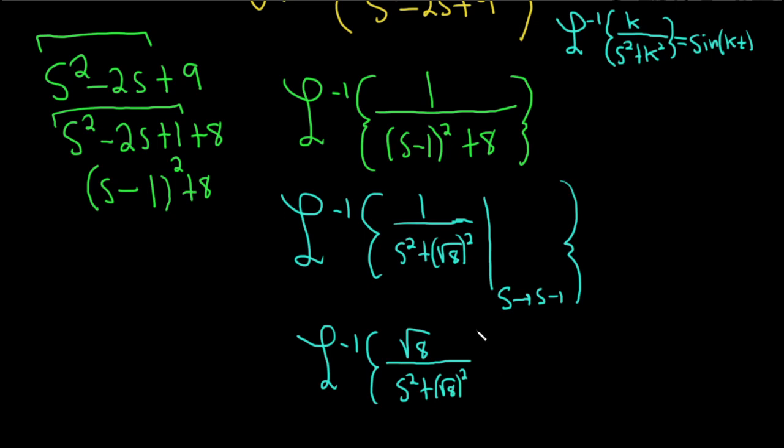You might say that's incorrect. It is. We need to get rid of the square root of 8. We can multiply by 1 over the square root of 8 and put it on the outside. Now we're in a good place.